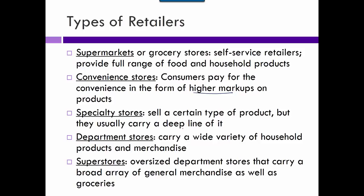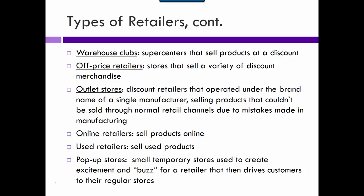Specialty stores sell just one type of product but have a deep line in it — like a sporting goods store, bookstore, or shoe store. A department store has a wider variety but not as deep. A superstore is an oversized department store with lots of stuff plus groceries — like Targets or Walmart with a grocery store. Warehouse clubs would be like Sam's Club. Off-price retailers would be like TJ Maxx or Marshalls. Outlets operate under the brand of a single manufacturer.